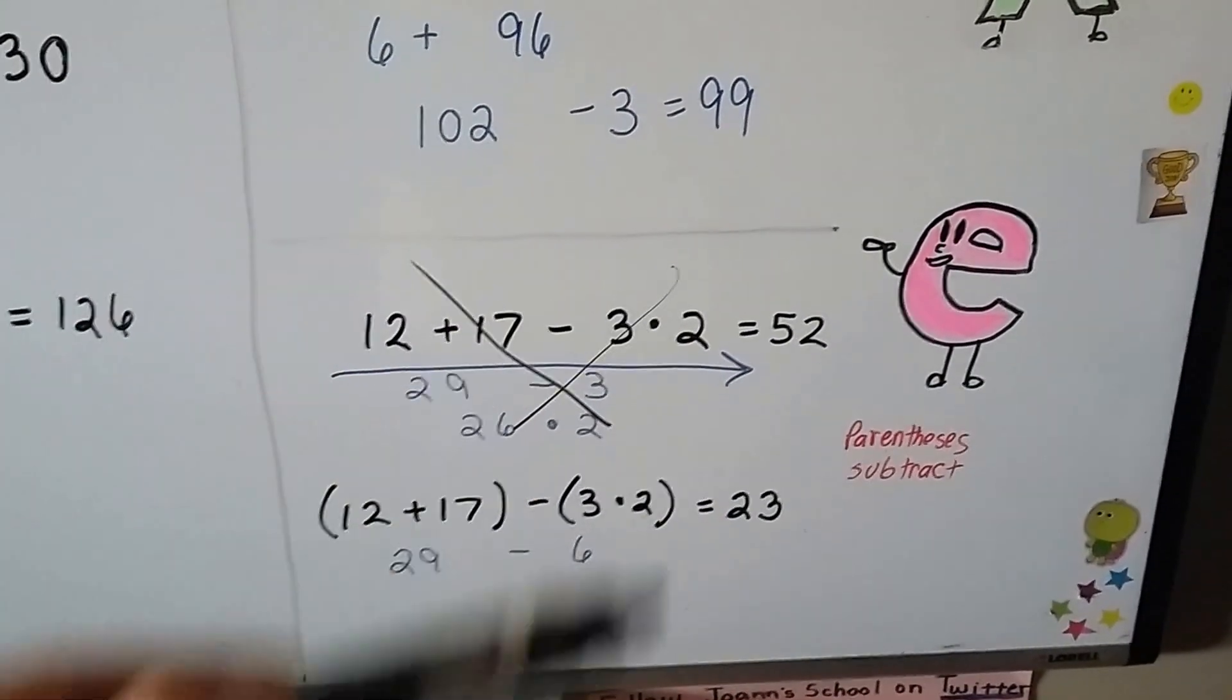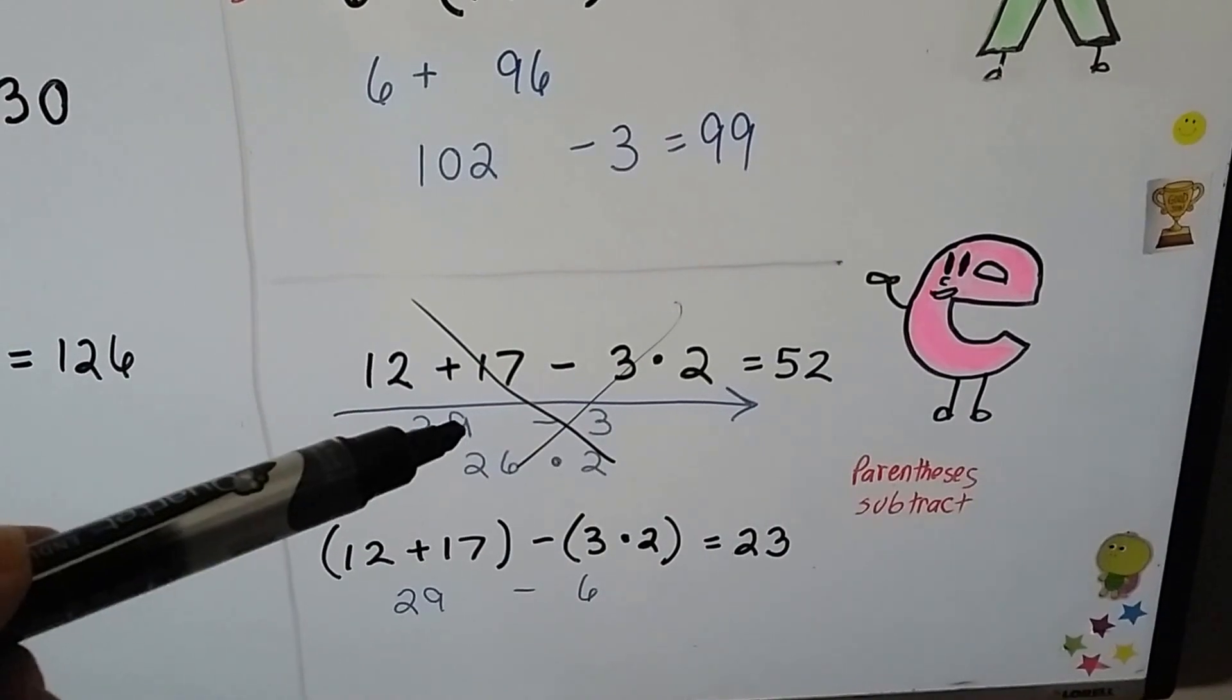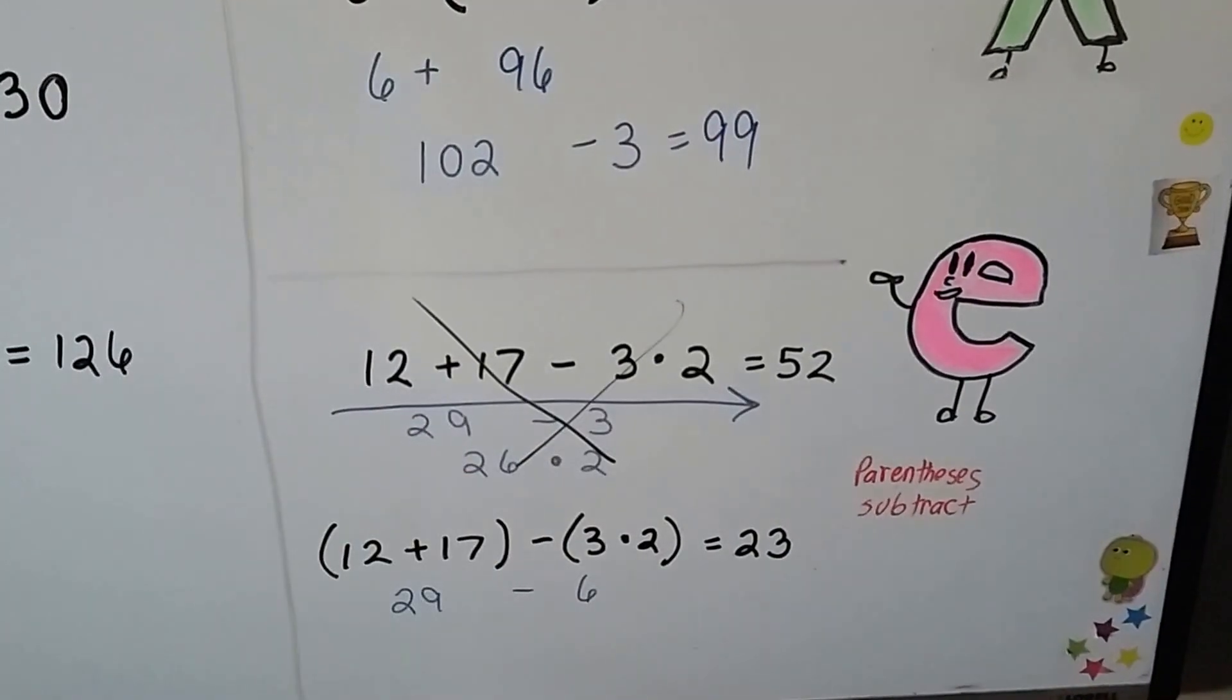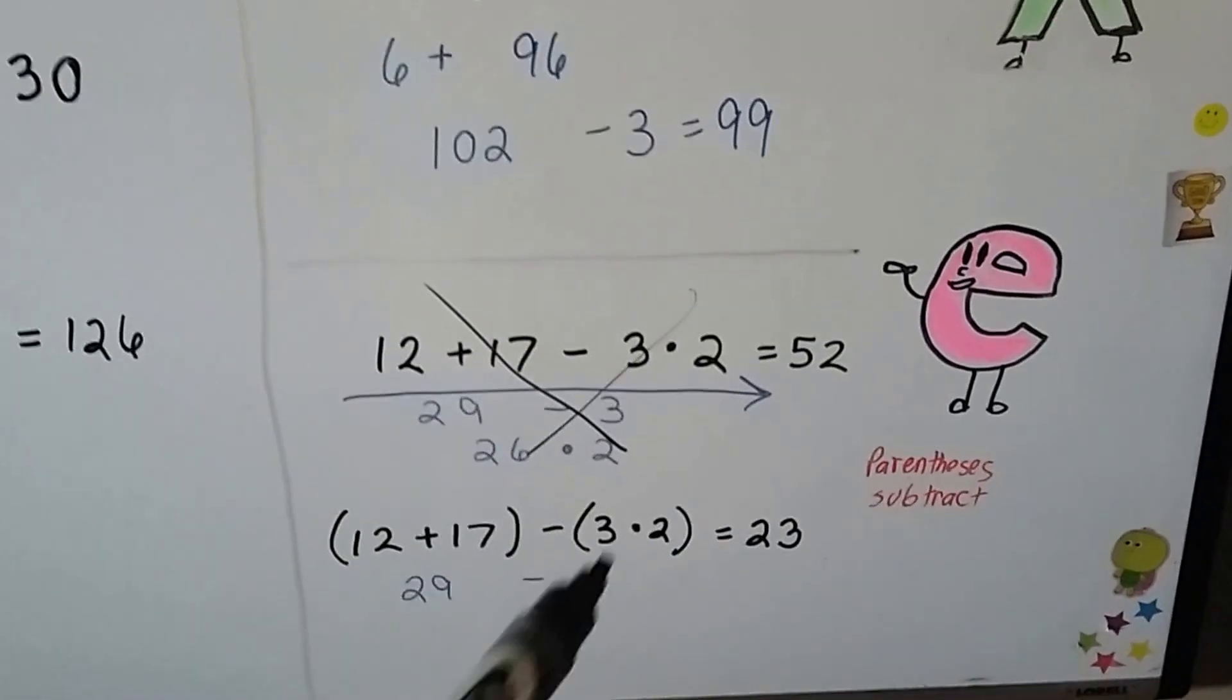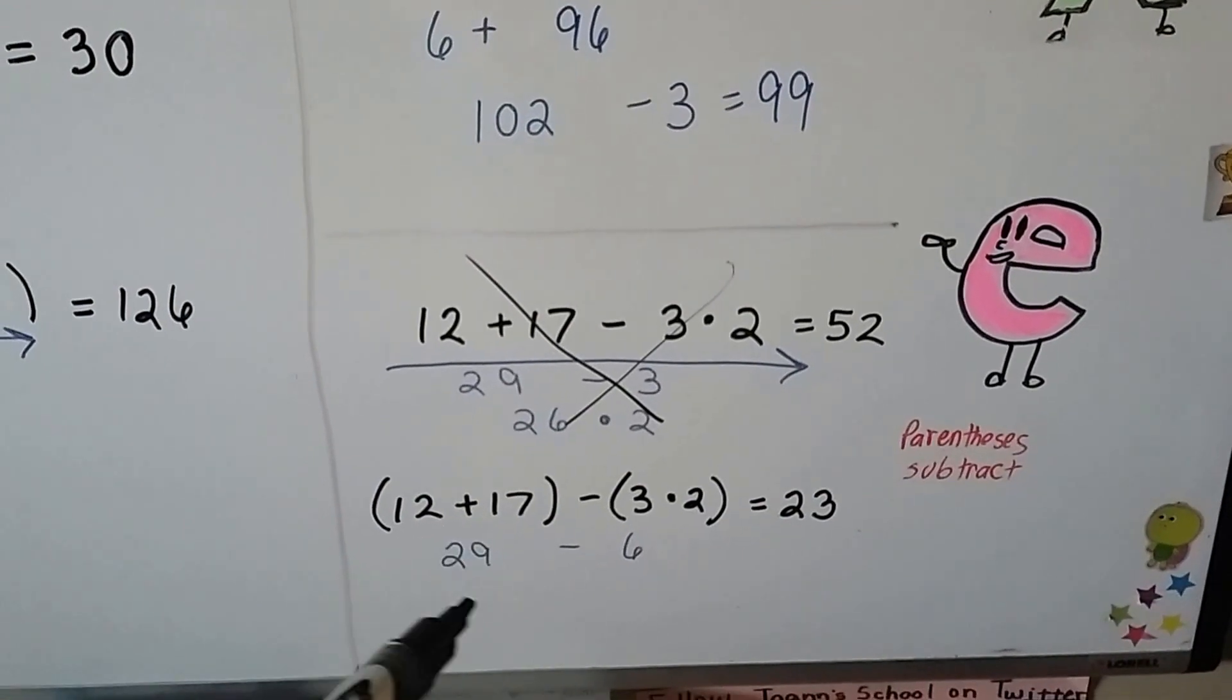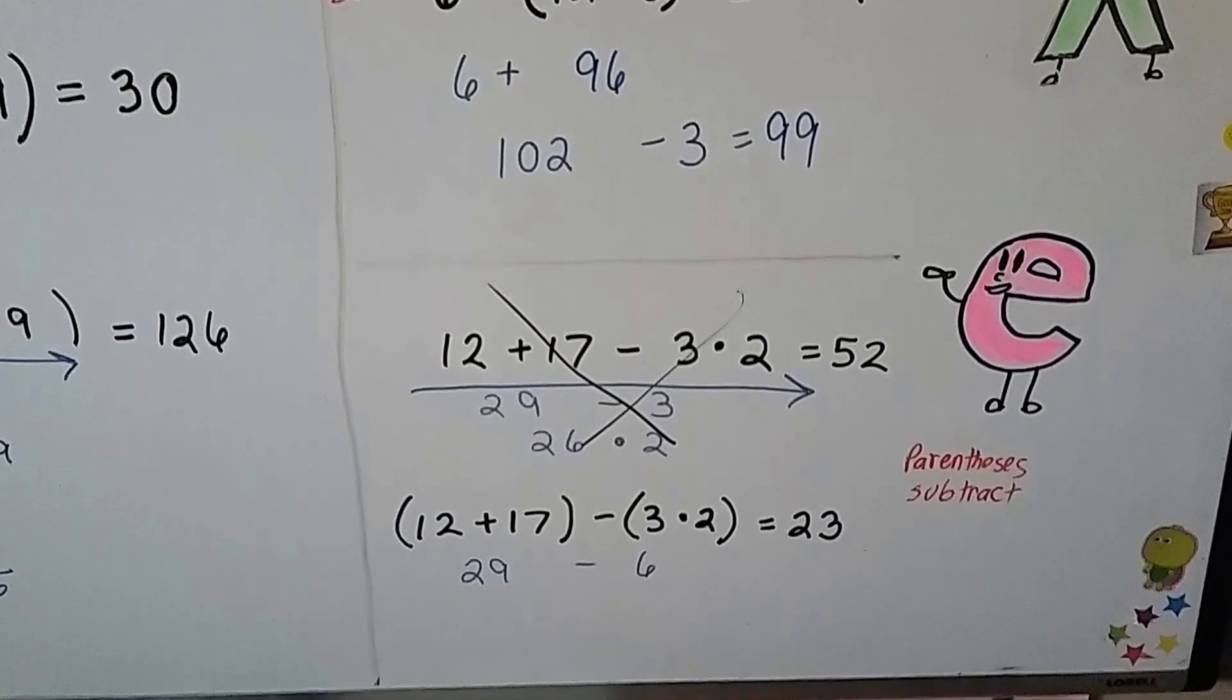With this one, I see multiplication. We can't go straight across. If we do it wrong, we're going to get 29 minus 3, which is 26, times 2, which is 52. It's wrong. We have to do the multiplication first, so we can put it in parentheses. We can even put this in parentheses and get a 29 minus 6, which is a 23.